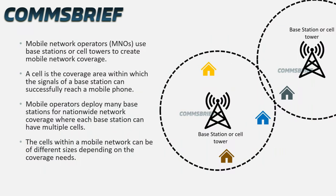Mobile network operators (MNOs) use base stations or cell towers to create mobile network coverage. A cell is the coverage area within which the signals of a base station can successfully reach a mobile phone. Mobile operators deploy many base stations for nationwide network coverage, where each base station can have multiple cells.